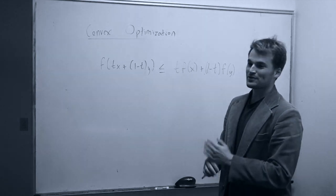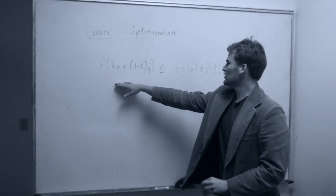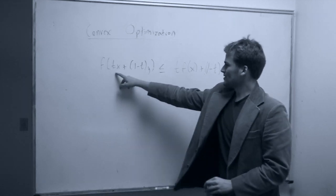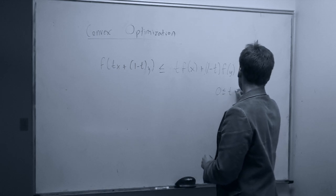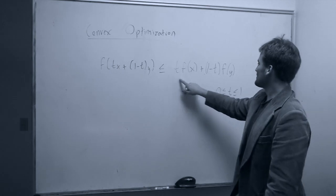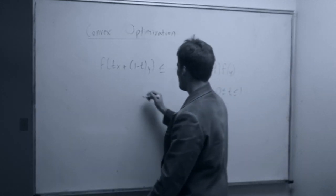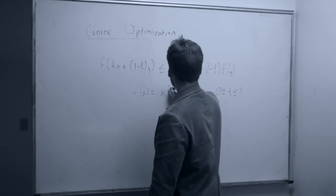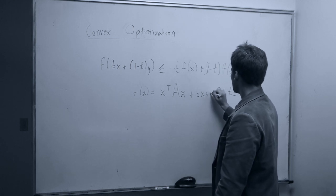Hey kids. So today we're going to talk about convex optimization. The definition of a convex function is f given x plus y and some variable t, where t is between 0 and 1. It's in this range if two variables is less than or equal to this. An example of a convex function would be the quadratic bowl, which you can write as x transpose Ax plus bx plus c.